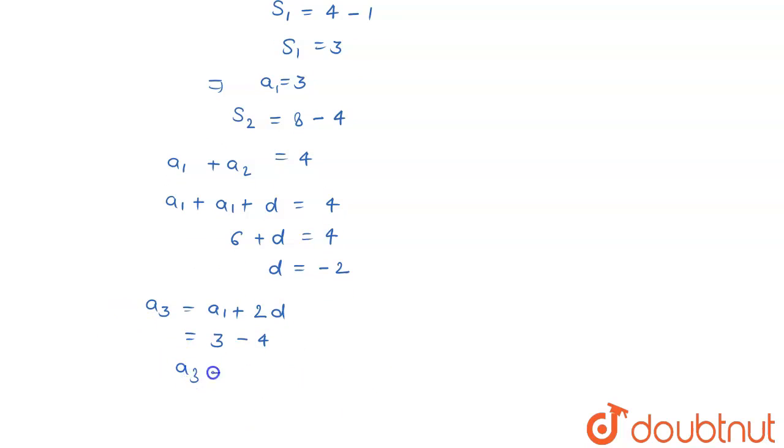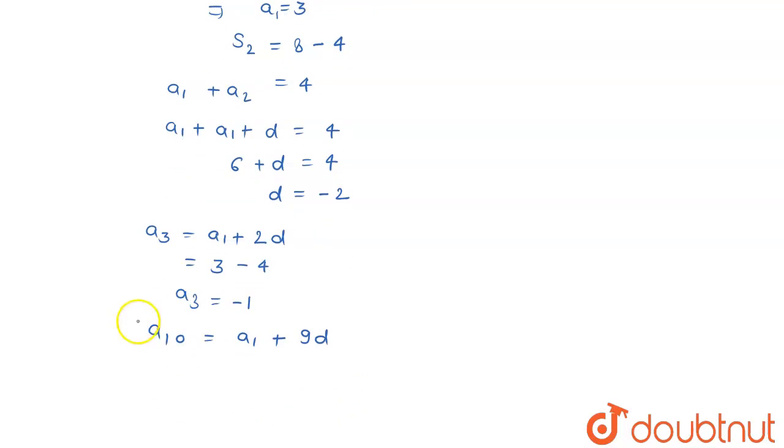Now my tenth term, I'm going to use this formula again, is going to be equals to a1 plus (10 minus 1) that is 9 times d. From here I can say that it will be 3 minus 18, or minus 15. This is the value of my tenth term.